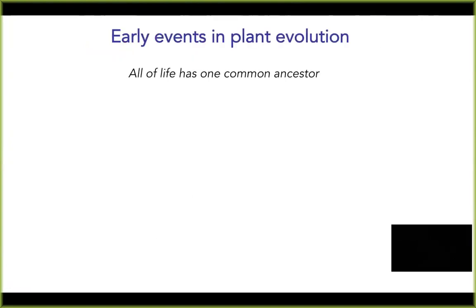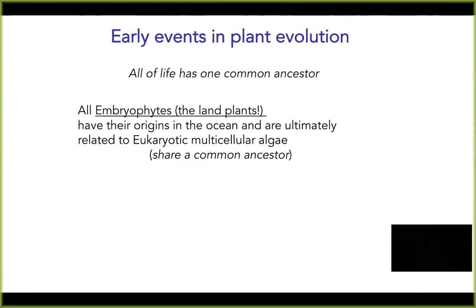Let's step back and think about early events in land plant evolution. All of life has one common ancestor, as we know from both the fossil record and molecular evolution. All land plants — also known as embryophytes — ultimately have their origins in aquatic environments and are related to a common ancestor within the eukaryotic multicellular algae. All land plants ultimately share a common ancestor that most likely was a multicellular algae.